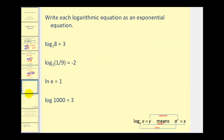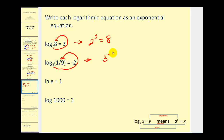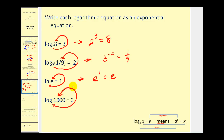Let's take these logarithmic equations and write them as exponential equations, just rewriting them using the definition of a logarithm. If you go clockwise around the equation: 2 to the third must equal 8 — that's correct. Three to the power of negative 2 equals one ninth — correct. Here's natural log, so that would be base e: e to the first power must equal e — correct. And for common log, recognizing this as base 10: 10 to the power of 3 must equal 1,000.